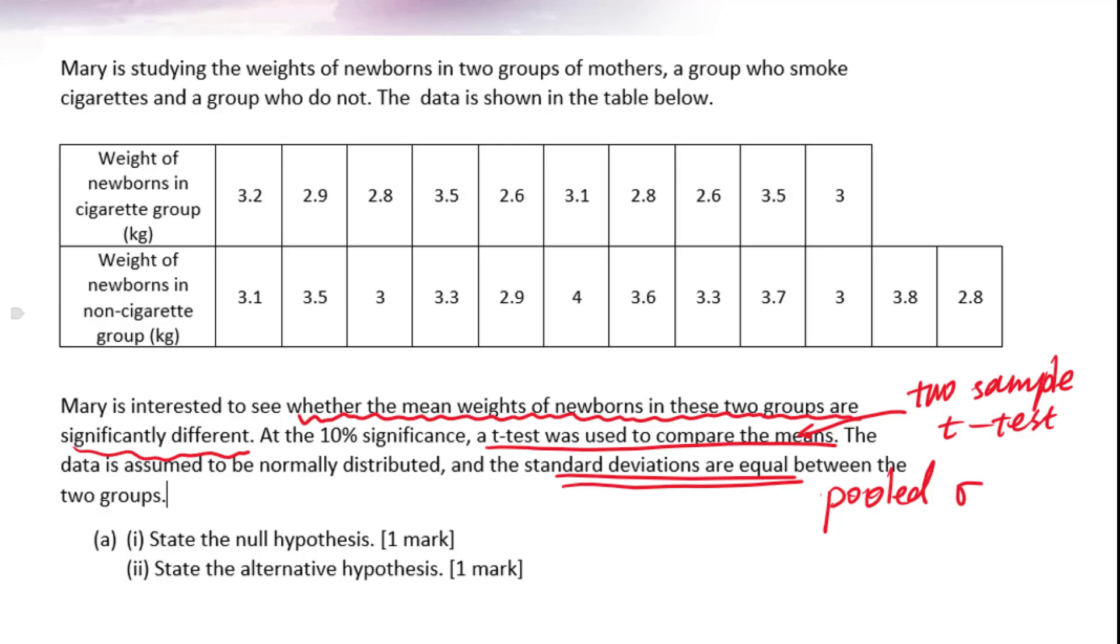State the null hypothesis. State the alternative hypothesis. Just remember that for null hypothesis, we always use the following words: equal, the same, independent, not biased. For alternative hypotheses, we will use the opposite words.